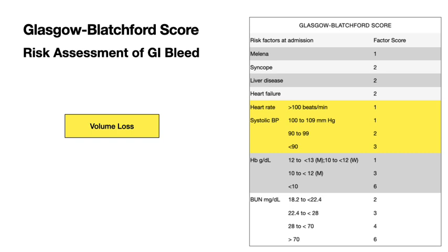When you look at dropping hemoglobin and rising BUN and creatinine — rising BUN especially — these are three different parameters to identify volume loss: syncope, tachycardia and hypotension, and then dropping hemoglobin and rising BUN and creatinine.